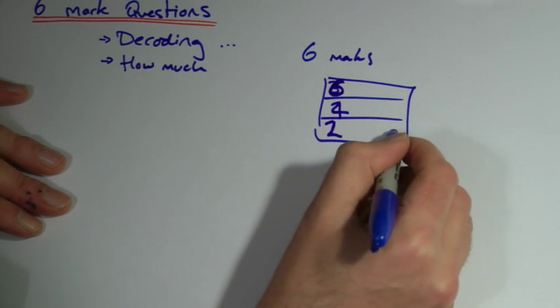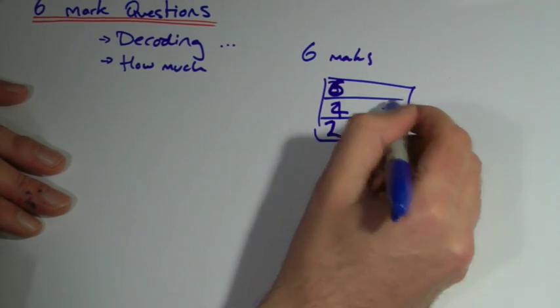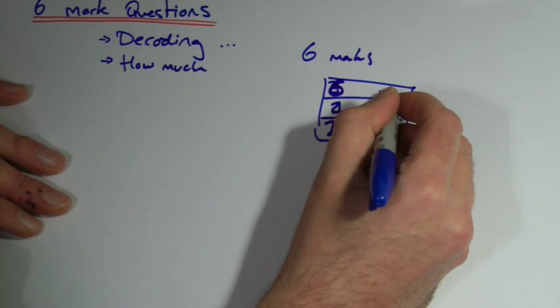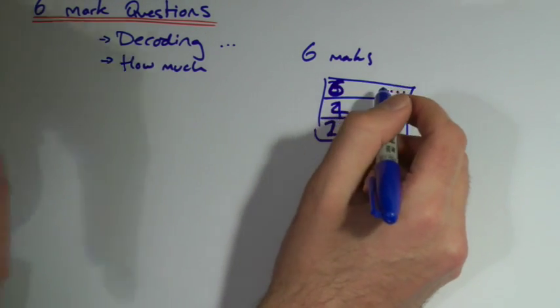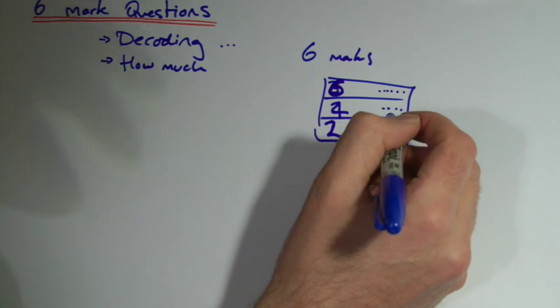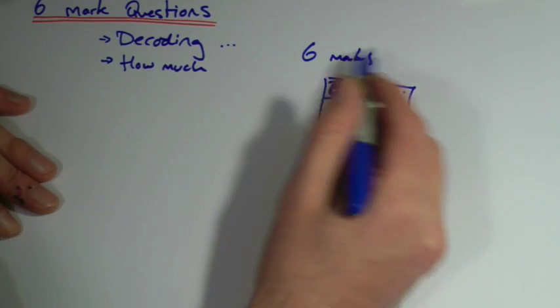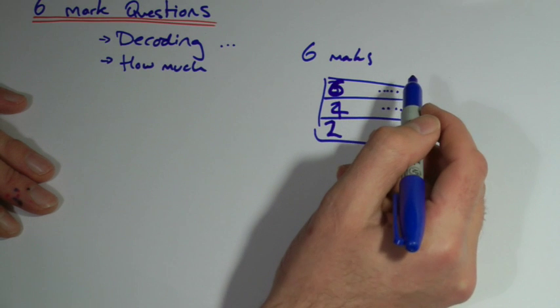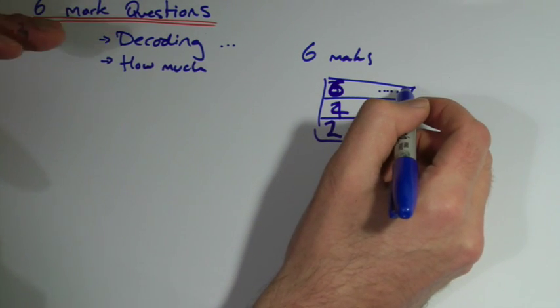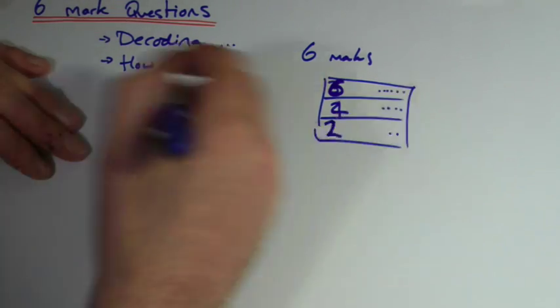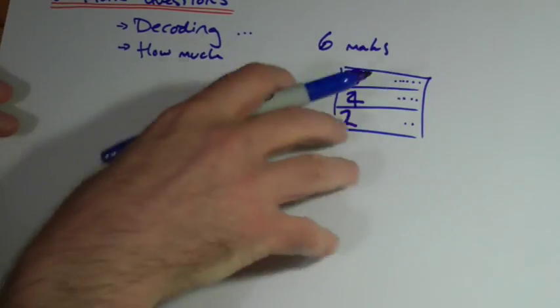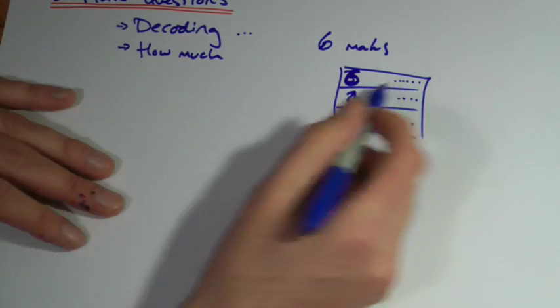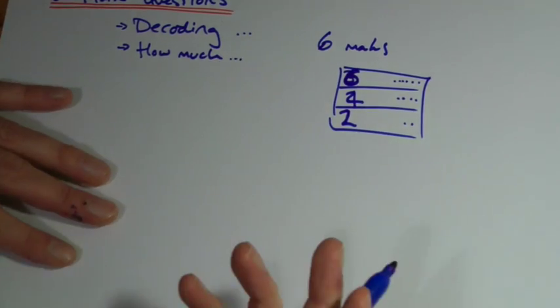So you can get a few bits right and get two marks, or you can get more bits right and get four marks, or you can get all the bits right and you get six marks. To be honest, when it says you're marked on your spelling, punctuation and grammar, if you're managing to write six things coherently, you're probably going to be okay. I would advise not to worry about it. People start panicking thinking I've got to write it like this and they simply don't write enough, and that's when you drop marks. You're better off putting more stuff in.